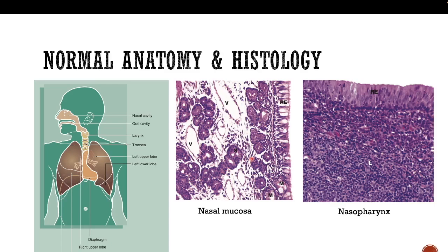Beneath that in the stroma you also have vascular spaces which represent the vascular supply for the tissue. In the nasopharynx it differs from the normal nasal mucosa — you have respiratory epithelium lining, and beneath that you have lymphoid tissue. It looks like a lymph node but it differs because it is lined by respiratory epithelium; otherwise it has this rich lymphoid tissue which is histologically similar to normal reactive lymph nodes.